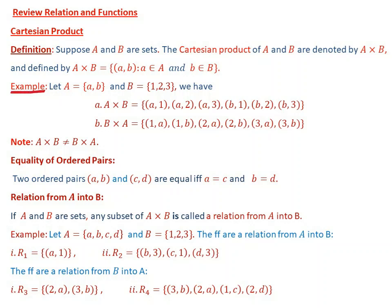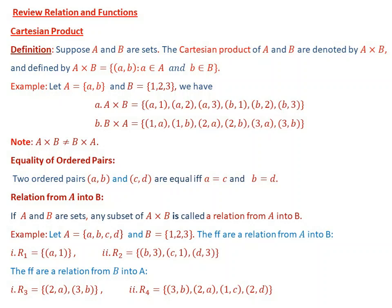For example, let set A contain elements {a, b} and set B contain elements {1, 2, 3}. Then A cross B, using the definition of Cartesian product, is the set of ordered pairs: A cross B = {(a,1), (a,2), (a,3), (b,1), (b,2), (b,3)}.